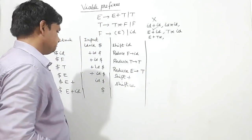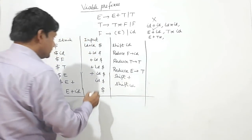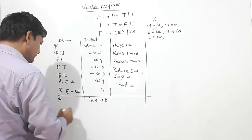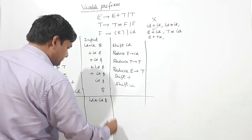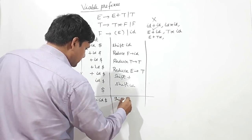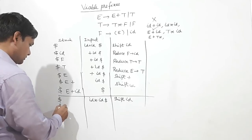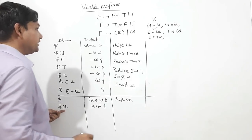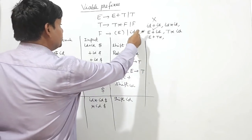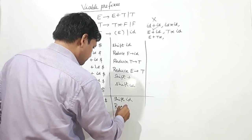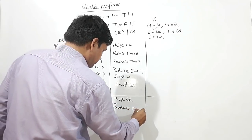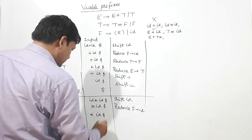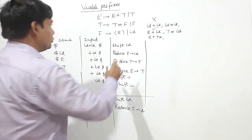E plus ID is appearing on the next step as a viable prefix. Now I will check for star. I take input ID star ID dollar. Dollar is here, I shift ID — so dollar ID star ID dollar. ID can be reduced by F.